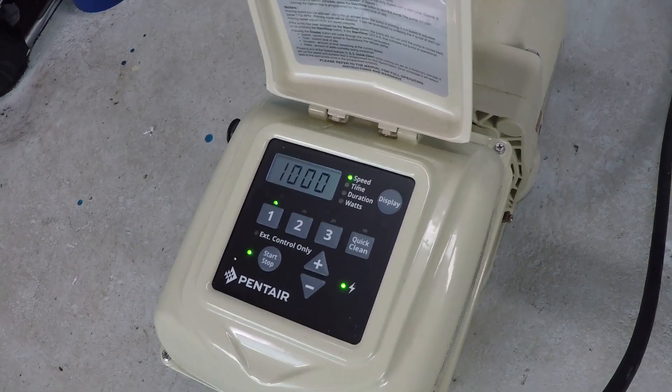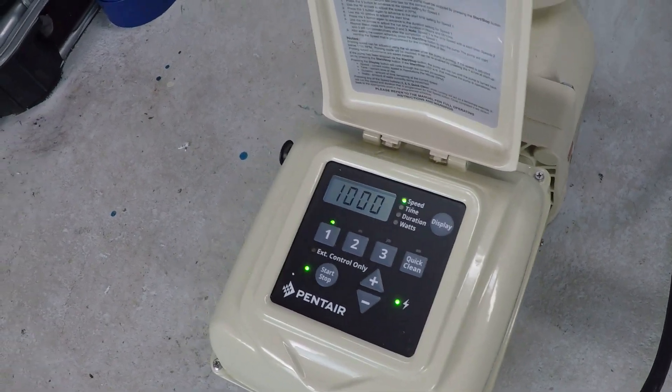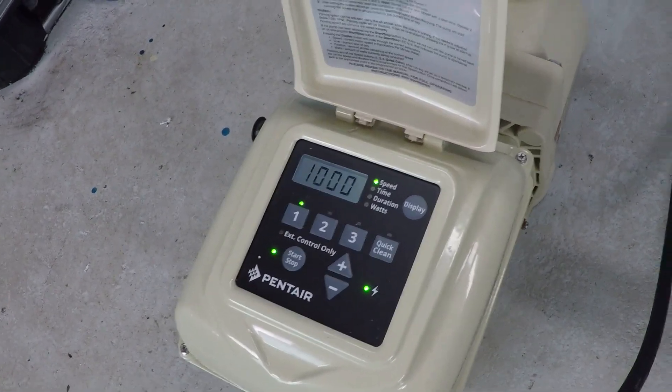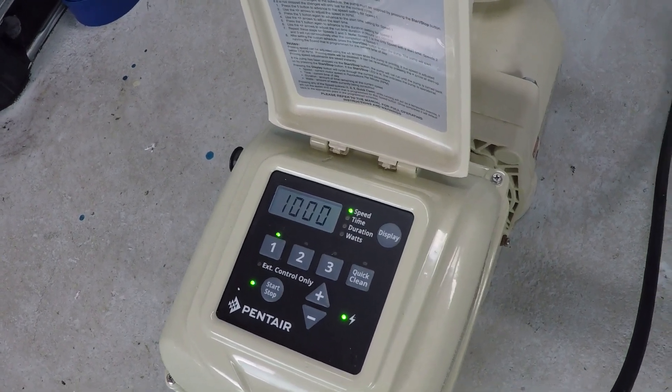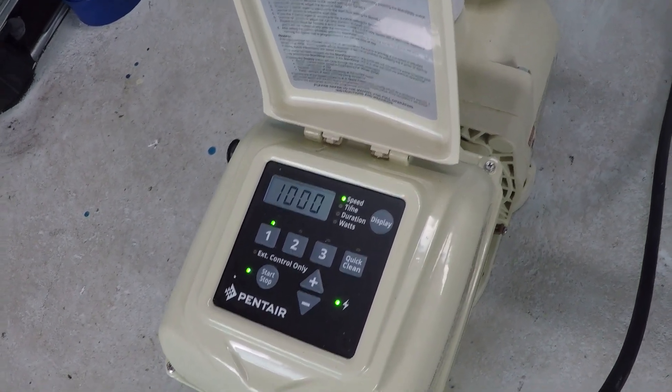This is stuff that you're supposed to calculate, not just say like, oh I run my pump four hours a day, water's always clear. You need to filter three times the volume of your pool every 24 hours. That's what you're aiming for.